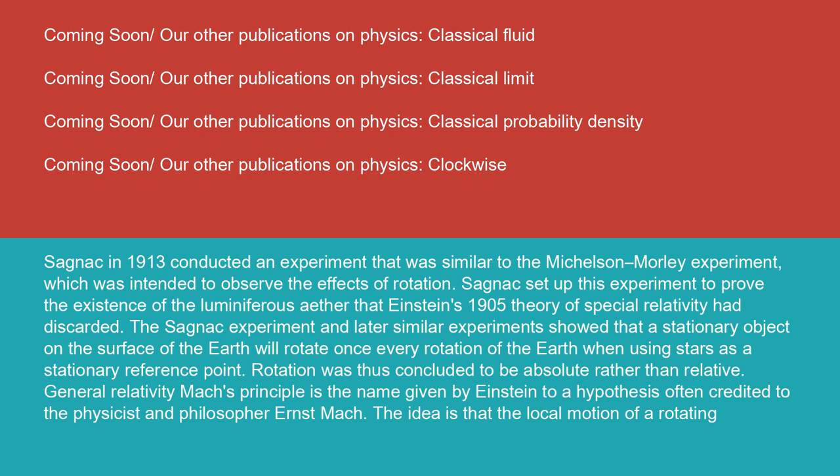The Sagnac experiment and later similar experiments showed that a stationary object on the surface of the Earth will rotate once every rotation of the Earth when using stars as a stationary reference point. Rotation was thus concluded to be absolute rather than relative.